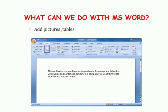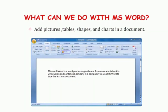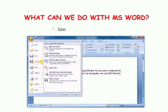We can add pictures, tables, shapes and charts in a document. हमने जो भी लिखा है, उसमें हम pictures, shapes, charts यह सारी चीज़ें लगा सकते हैं. And we can save a document for future use. हम अपने future use के लिए अपने document को permanently save भी कर सकते हैं.